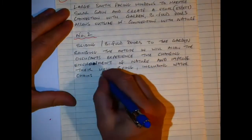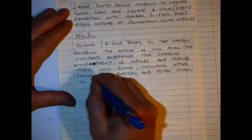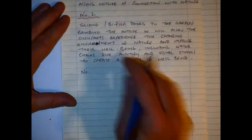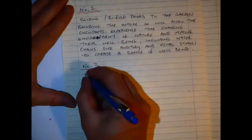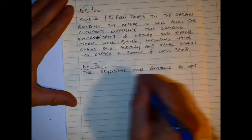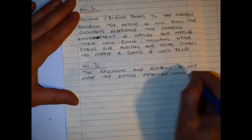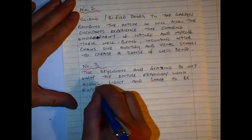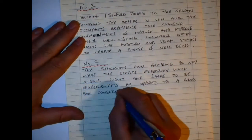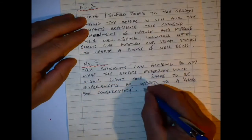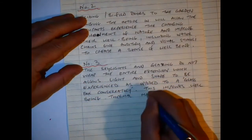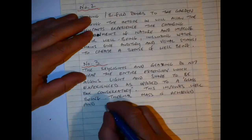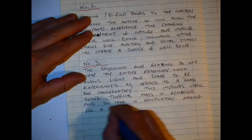Another thing was the longitudinal windows allowing the occupants to experience light and shade. The number three consideration of the skylights and glazing allows light and shade to be experienced as opposed to a glass box conservatory type thing. It improves the well-being and thermal mass is also achieved, as well as ventilation for making a comfortable environment.